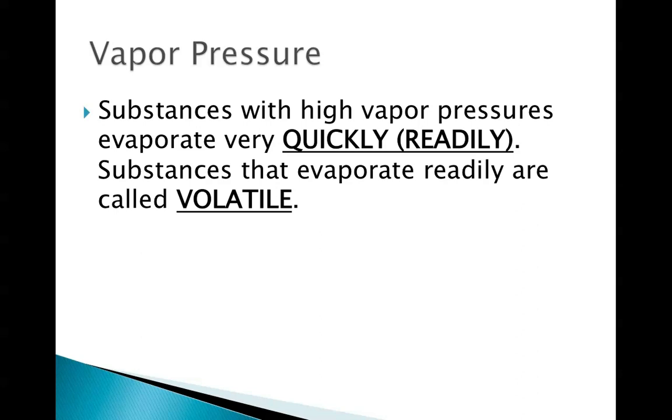Substances with high vapor pressures evaporate very quickly or readily. Substances that evaporate readily are called volatile. Usually things that we can smell right away tend to be volatile because they're going into that gas state and we're smelling them quickly.